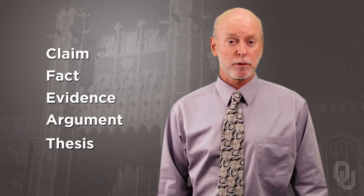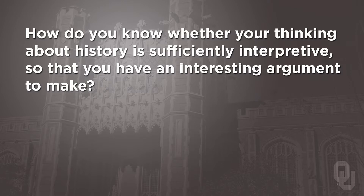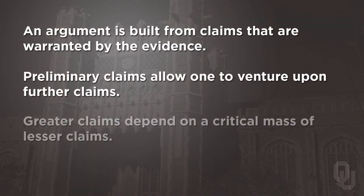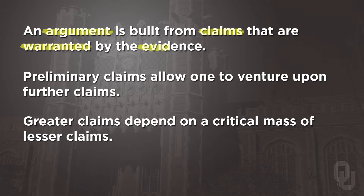These terms will be useful in coming to terms with our central concern in this lesson: How do you know whether your thinking about history is sufficiently interpretive so that you have an interesting argument to make? What qualifies as a good thesis? Let's configure some of the basic terms in a way that moves us closer to answering our question with a series of three statements. An argument is built from claims that are warranted by the evidence. Preliminary claims allow one to venture upon further claims. Greater claims depend on a critical mass of lesser claims. The word 'warranted' means justified or authorized — an argument's claims must be justified by the evidence used to support them.